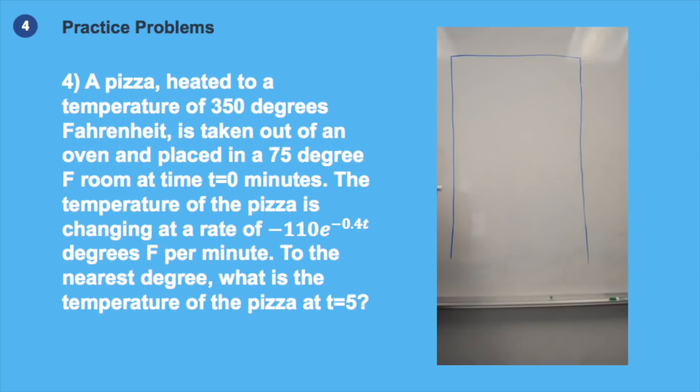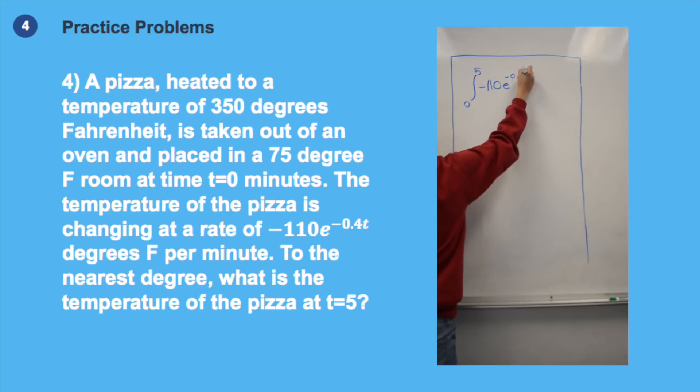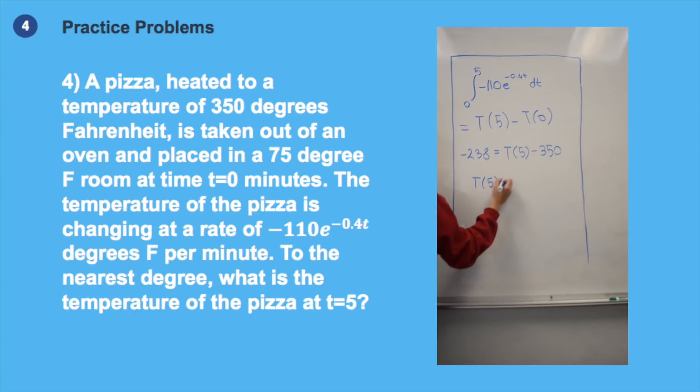In order to find the temperature of the pizza at t equals 5, we have to have a definite integral to calculate the overall change of the temperature of the pizza. This definite integral is equal to the temperature at t equals 5 minus temperature at t equals 0. Now we know that at t equals 0 our temperature is 350 Fahrenheit. When we solve the definite integral, we get minus 238. And when we plug in everything that we know, we can see that at t equals 5, the temperature of the pizza will be 112 degrees.